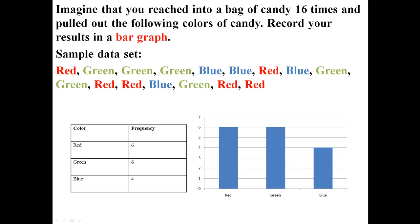So you can see that we have six reds, six greens, and four blues. Notice that this is a bar graph, as in the bars are not touching each other. If they were touching each other, that would be a histogram and that would be something a little bit different.